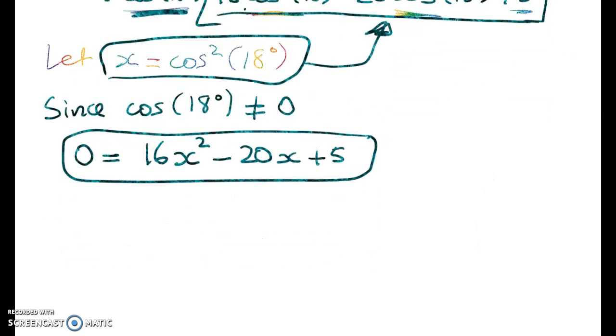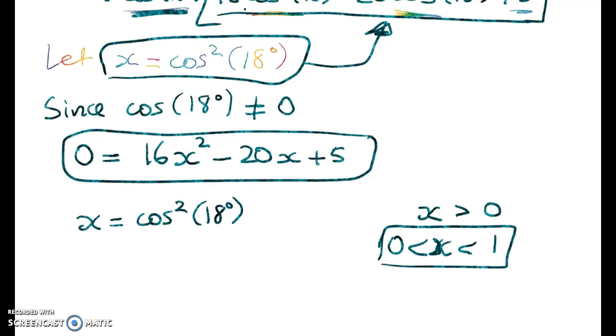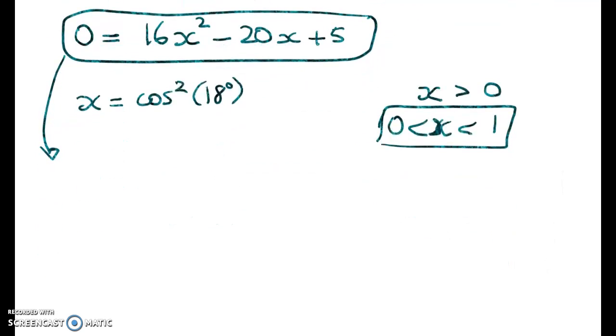Now, while we're here, we've got x is equal to cos squared of 18 degrees. So what do we know about x? Well, we know, first of all, that because x is squared, x must be positive. But we also know that x must be between 0 and 1. And we're going to go even further later on to narrow down the possible values of x. But for now, all we have to do is chuck this thing into the quadratic formula.